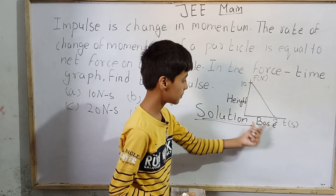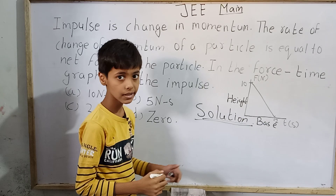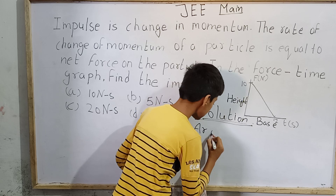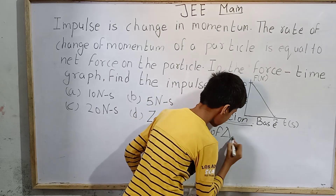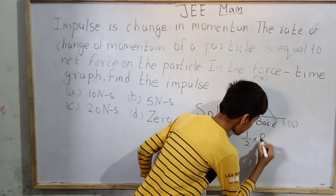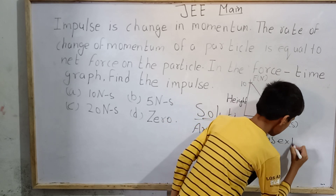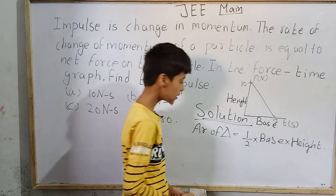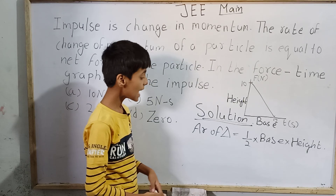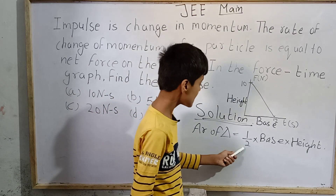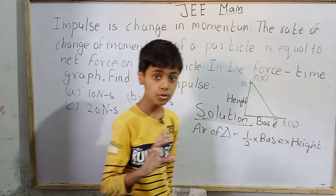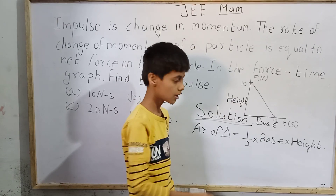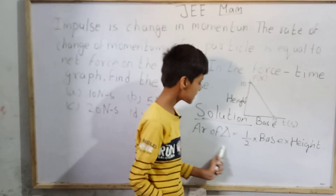The formula for the area of a triangle — since we all know — area of a triangle is equal to half into base into height. This formula applies to right-angle triangles, which make a 90-degree angle. For a right-angle triangle, area equals half into base into height.